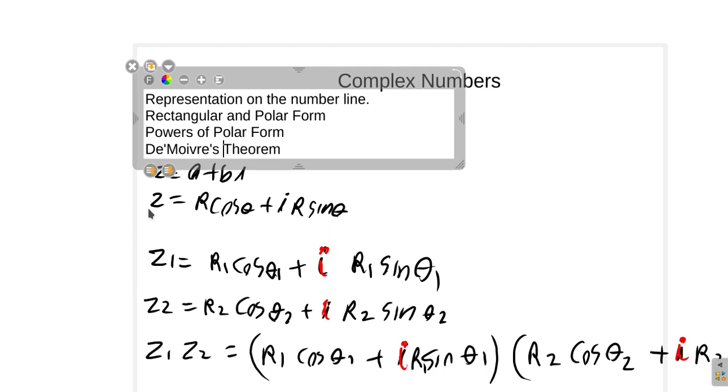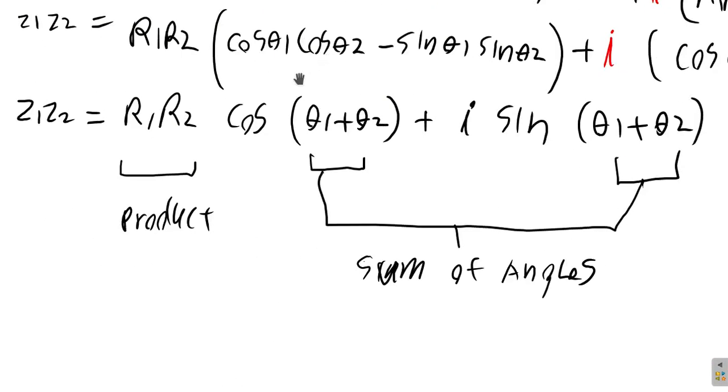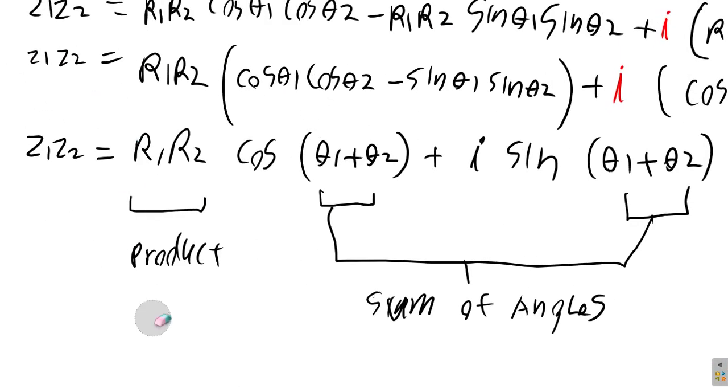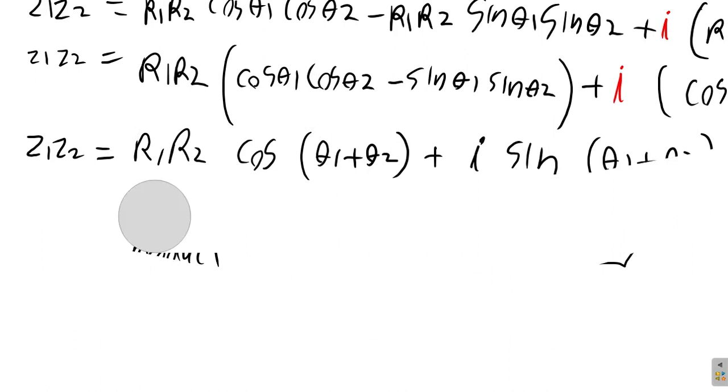De Moivre's theorem. So, it said here that he was a French mathematician known for the formula that we're going to look at called De Moivre's theorem. It kind of looks like the Mois-Verl or Vries theorem, but it's French. So, I guess they call it De Moivre's theorem. Let's erase these parts of the board and see what we can come up with.